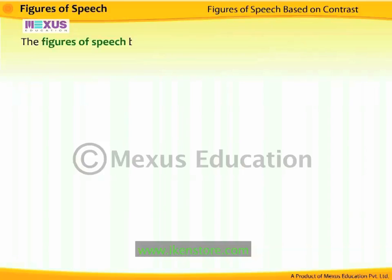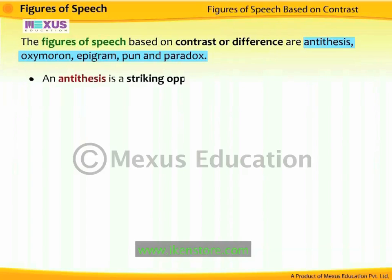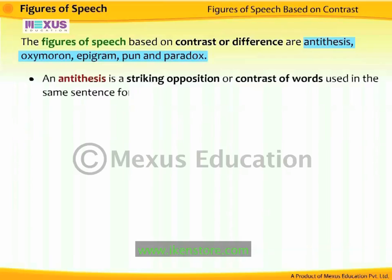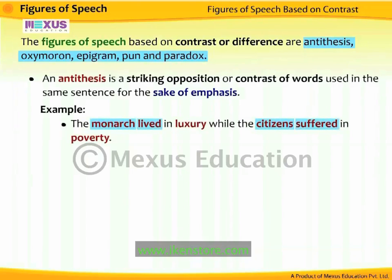The figures of speech based on contrast or difference are antithesis, oxymoron, epigram, pun, and paradox. An antithesis is a striking opposition or contrast of words used in the same sentence for the sake of emphasis. For example, 'the monarch lived in luxury while the citizens suffered in poverty.' The words monarch and citizens, lived and suffered, and luxury and poverty are antithetical in nature.